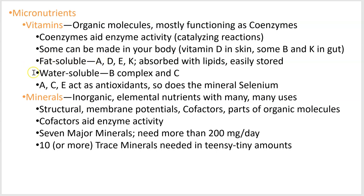Vitamins can be classed as either fat-soluble or water-soluble. On your cereal box you'll see lots of B vitamins — 'B complex' just means there's more than one specific B vitamin. The B complex vitamins and vitamin C are all water-soluble: you can eat more than you need and you'll dissolve it and get rid of it in your urine. Fat-soluble vitamins A, D, E, and K are absorbed with lipids and stored in lipids in your body, so you can actually get toxic concentrations if you eat too many of them. Don't super-dose on vitamin D, whereas with vitamin C you'll just have expensive urine.